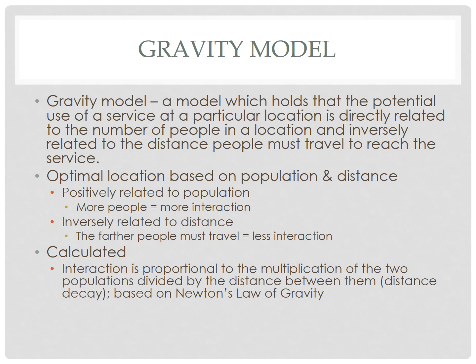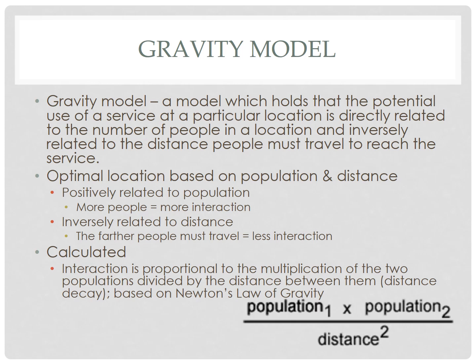We can actually calculate this using a formula similar to Newton's law of gravity: population of one place times the population of a second place, divided by the distance between them squared. That gives us an interaction coefficient — the higher the interaction coefficient, the more interaction there should be in theory.